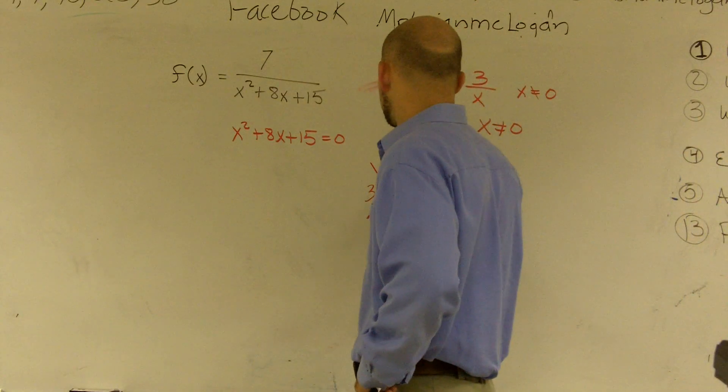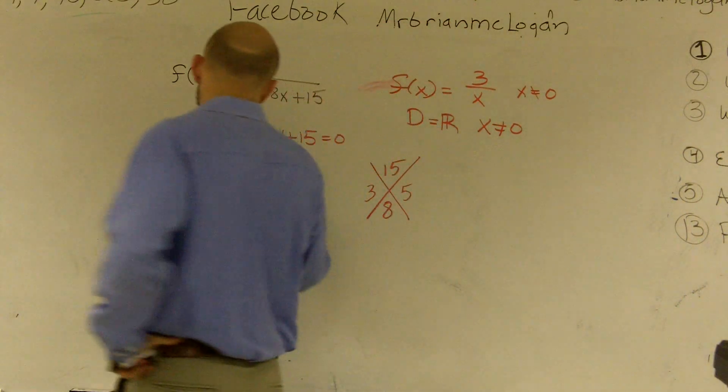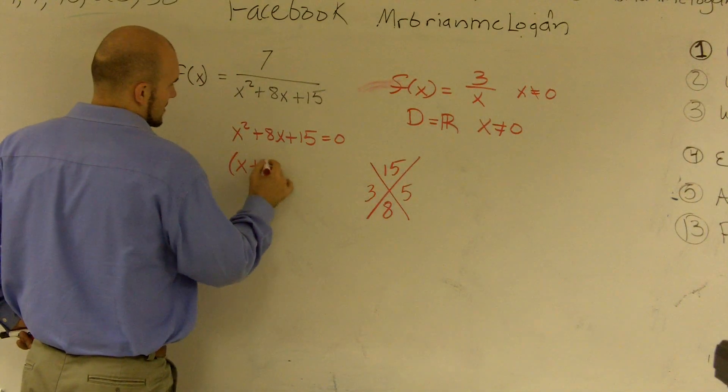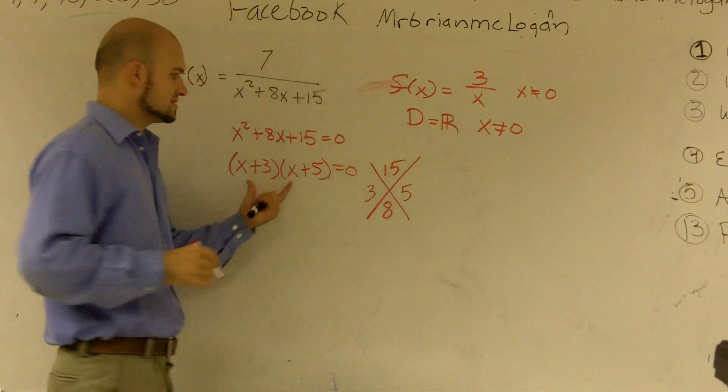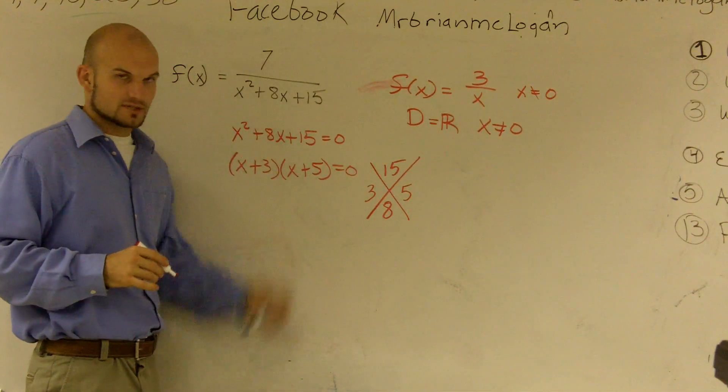And those answers are going to be 3 and 5. So therefore, I can factor this to be x plus 3 times x plus 5 equals 0. And if I was to foil this back out, I would get this expression.